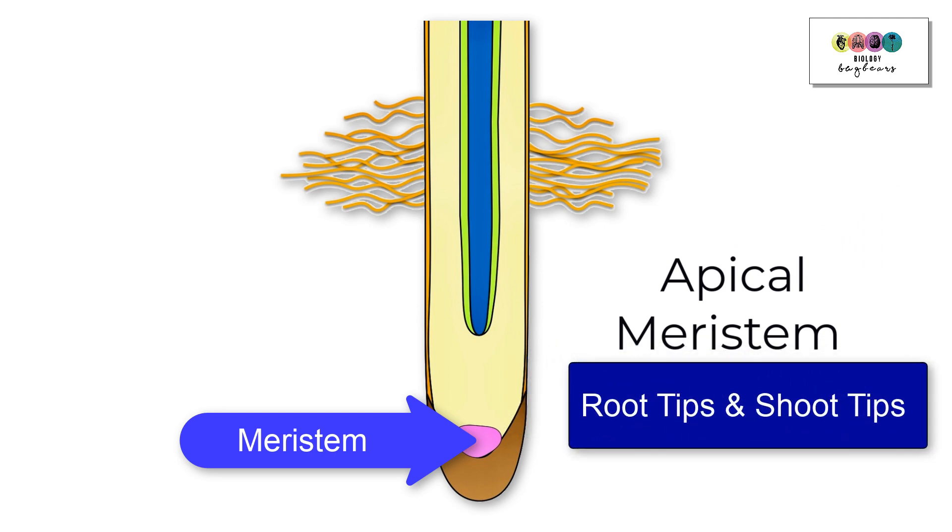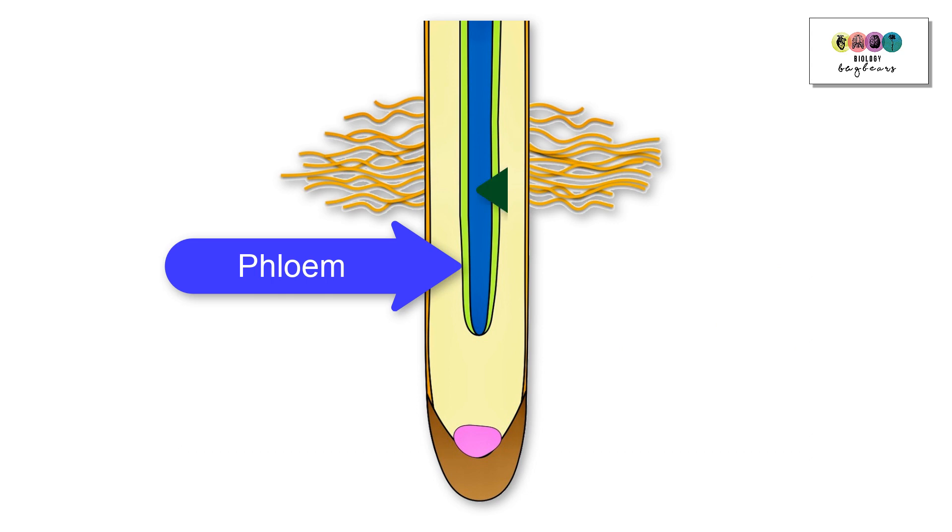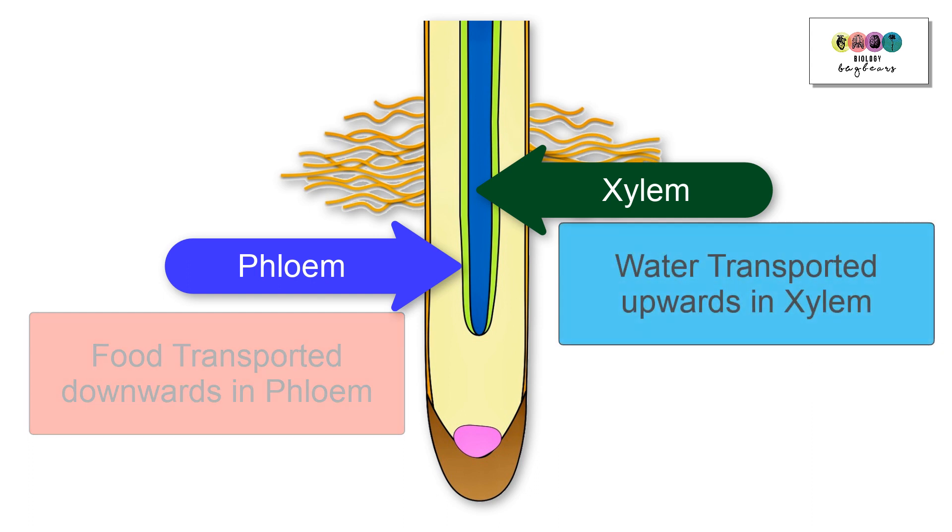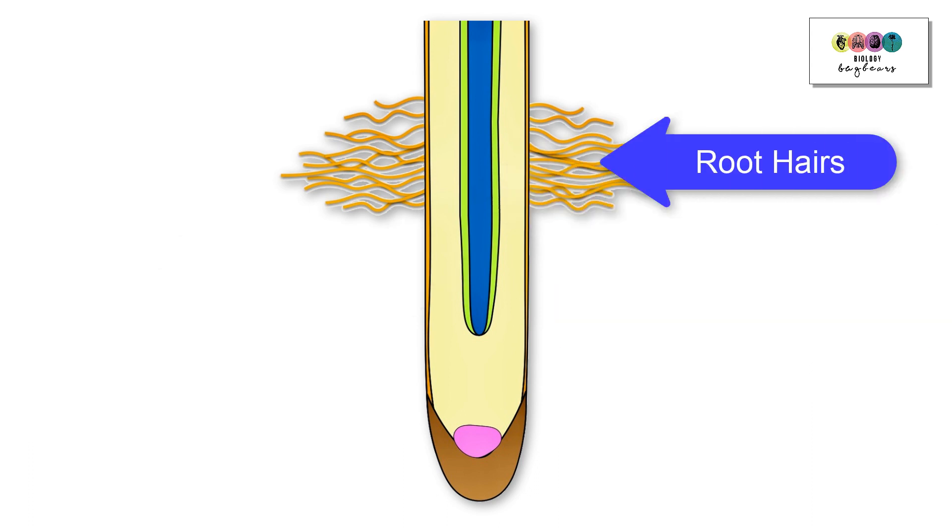Next we have the vascular tissue: phloem and xylem. Food is transported in phloem downwards through the plant, and water is transported upwards in xylem.